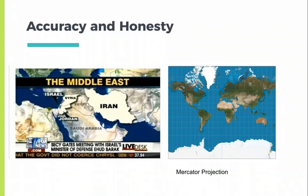It is important, of course, to have accuracy and honesty in your mapmaking. There are more and less subtle versions of this. On the left side, we have an improbable Egypt taking the place of Iraq, for reasons best known to Fox News.